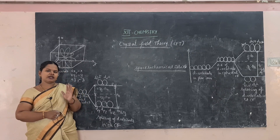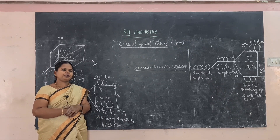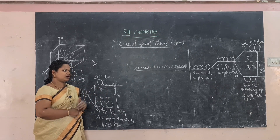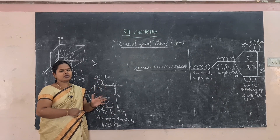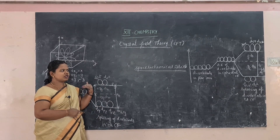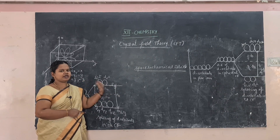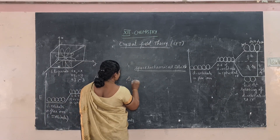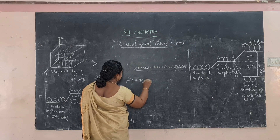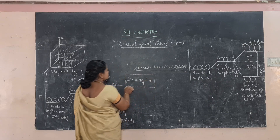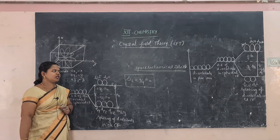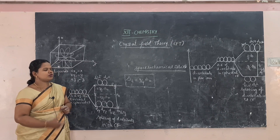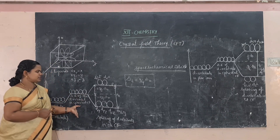Write the assignment today itself without postponing it. All concepts in chemistry are very important; don't skip or avoid any videos. These concepts are very important for competitive examinations. The relation connecting crystal field splitting energy in tetrahedral and octahedral field is delta_t = (4/9) delta_o.